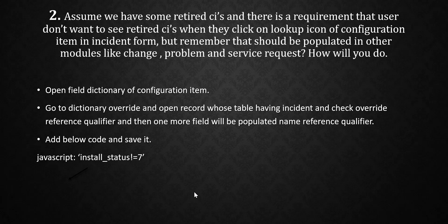To achieve this, open the field dictionary of configuration item, go to dictionary override, and open the record whose table is incident. Check the 'Override Reference Qualifier' checkbox. After that, a new field called 'Reference Qualifier' will appear. In that field, write this code: javascript: install_status != 7 — and save it. After saving, go to the incident form and you will see that retired CIs will no longer populate.